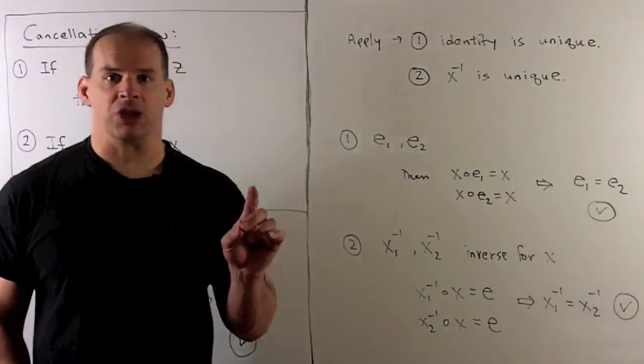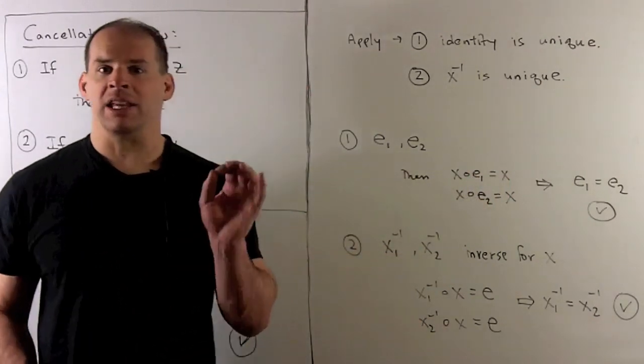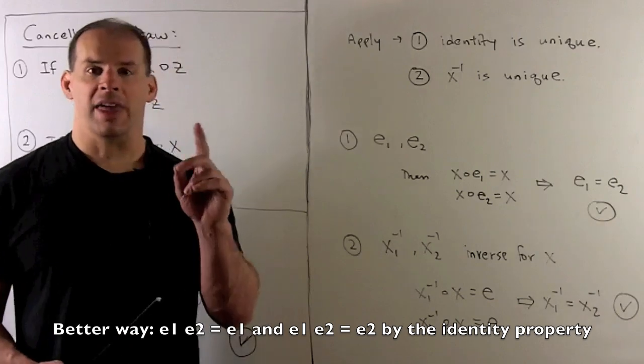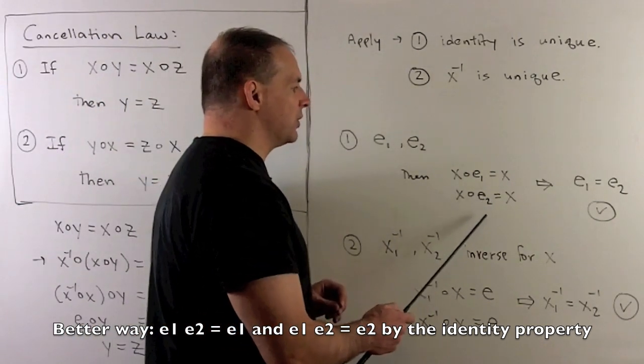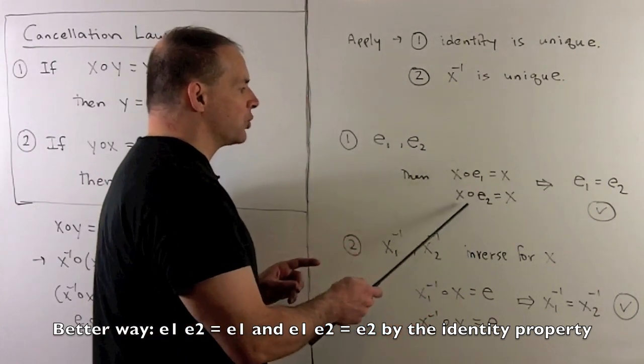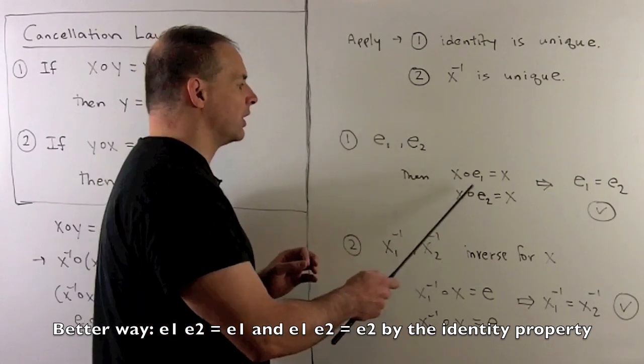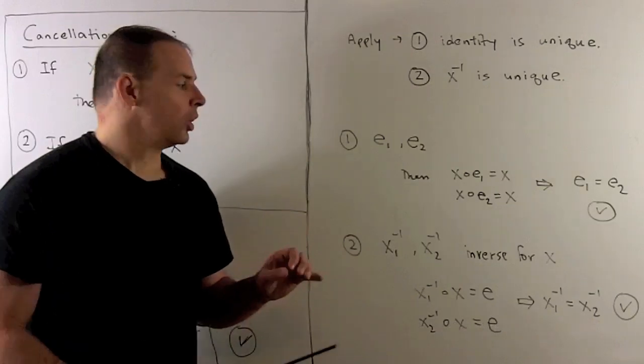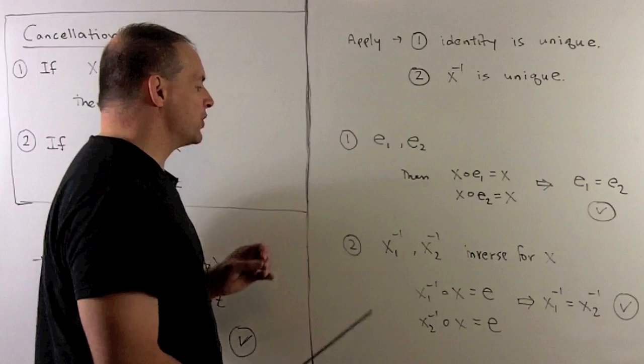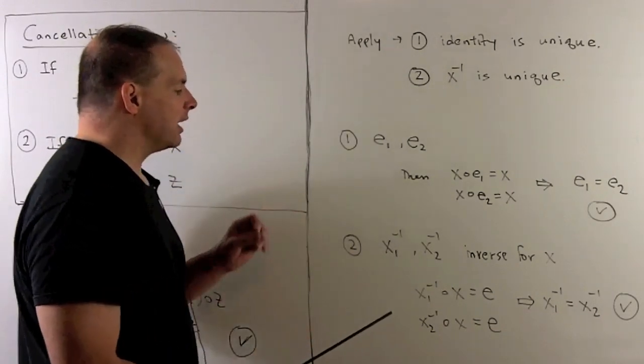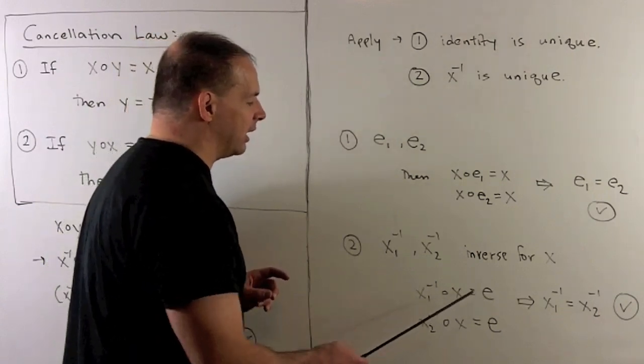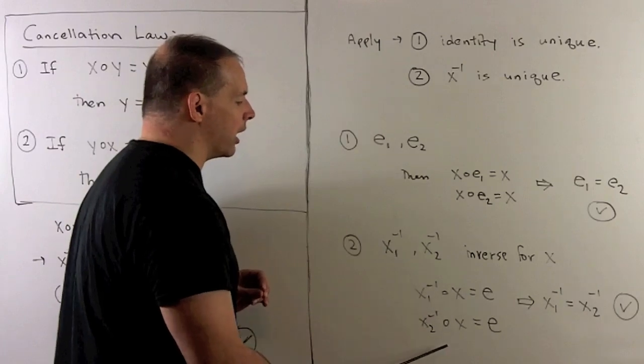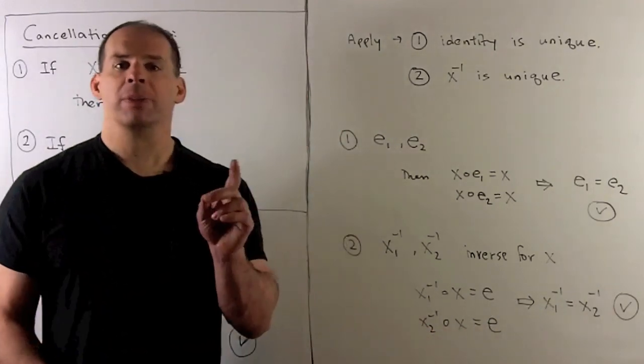One way to apply the cancellation law: I can show that the identity element is unique and that each x⁻¹ is unique. Suppose we have two identity elements e₁ and e₂. Then x·e₁ = x and x·e₂ = x, and we know these are both equal to x. So these are equal and we can apply the cancellation law to remove the x's on the left-hand side. That gives us e₁ = e₂. So our identity element is unique. For the inverses, let's fix an x and suppose we have inverses x₁⁻¹ and x₂⁻¹. Same idea. I'm going to multiply x₁⁻¹ times x and get the identity. x₂⁻¹ times x gives me the identity. So we have that these two expressions are equal. Then I can cancel the x's on the right. So x₁⁻¹ = x₂⁻¹. So the inverse of x is unique.